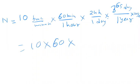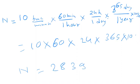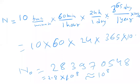The rough estimate would be 60 × 24 × 365 × 100. Suppose the result comes out to something like 283,970,548. We can write this as 2.8 × 10^8. Counting the digits: 1, 2, 3, 4, 5, 6, 7, 8 — so the order of magnitude is 10^8. This gives a rough idea of the scale.